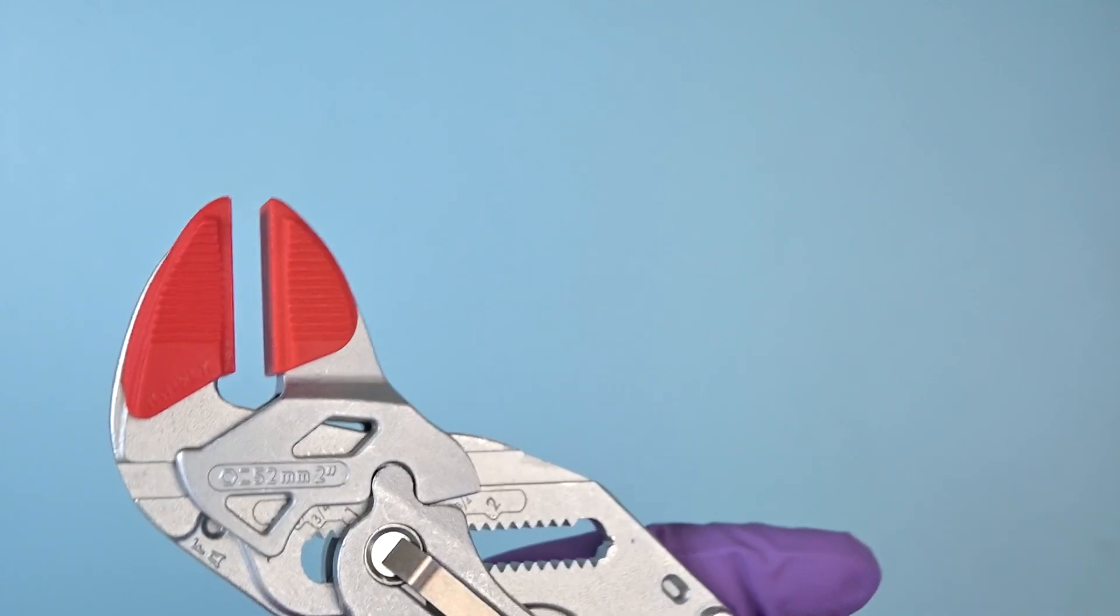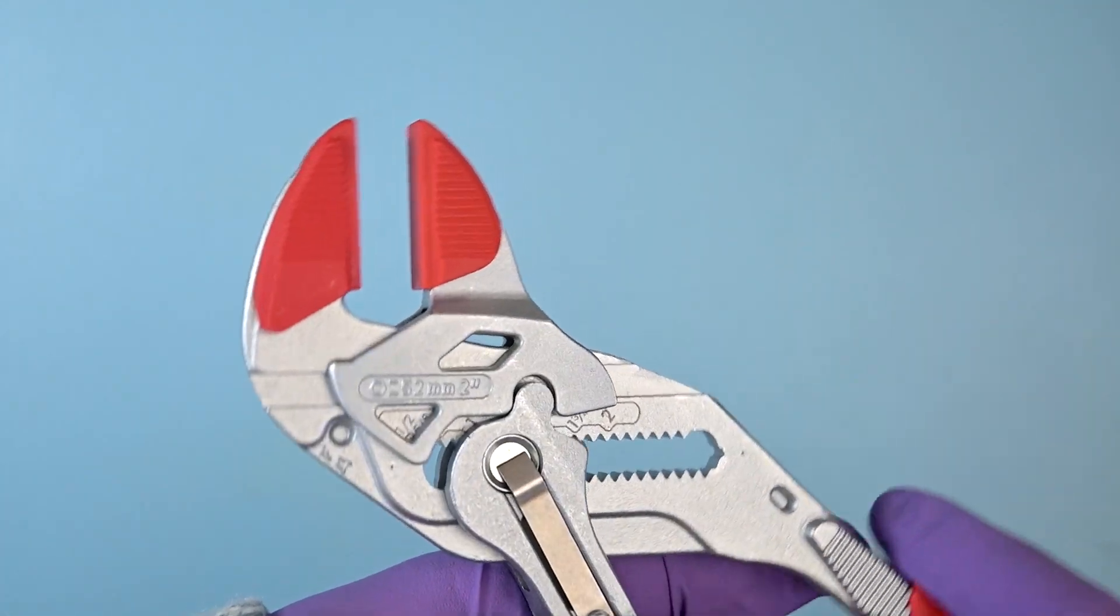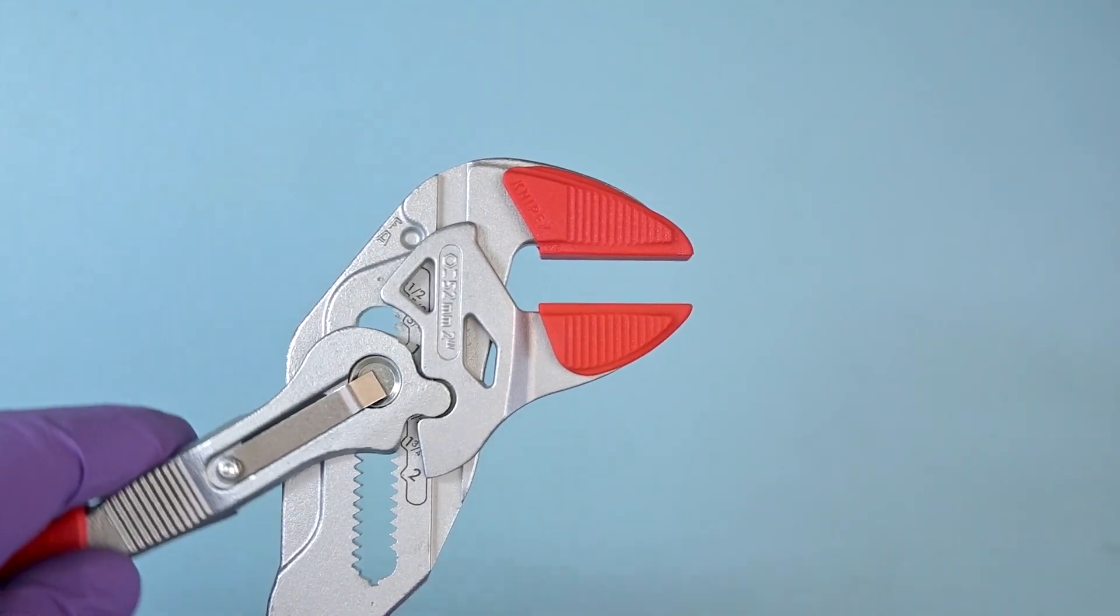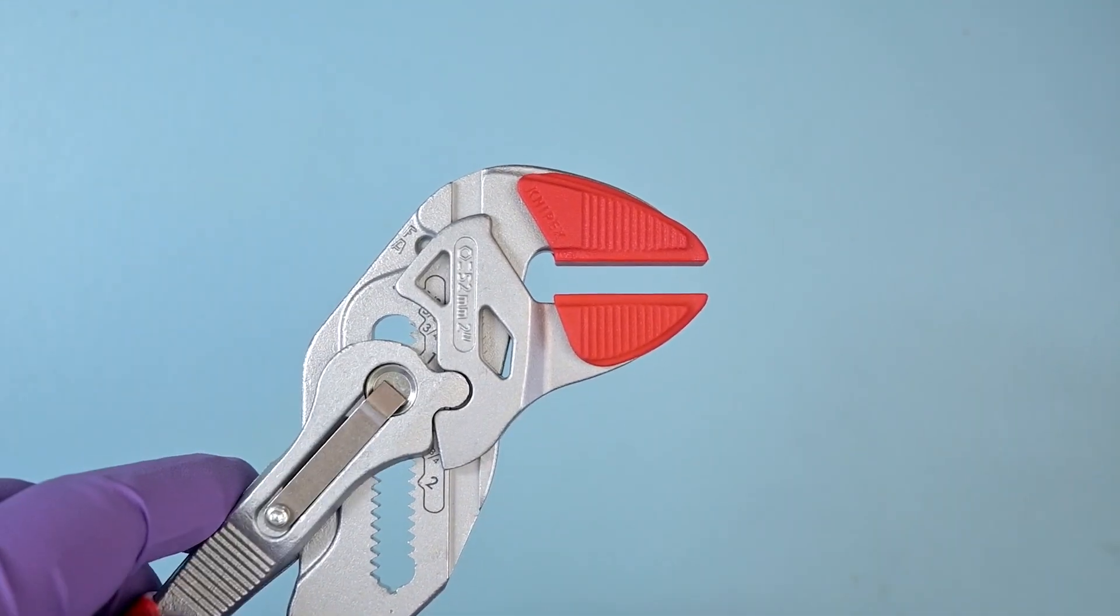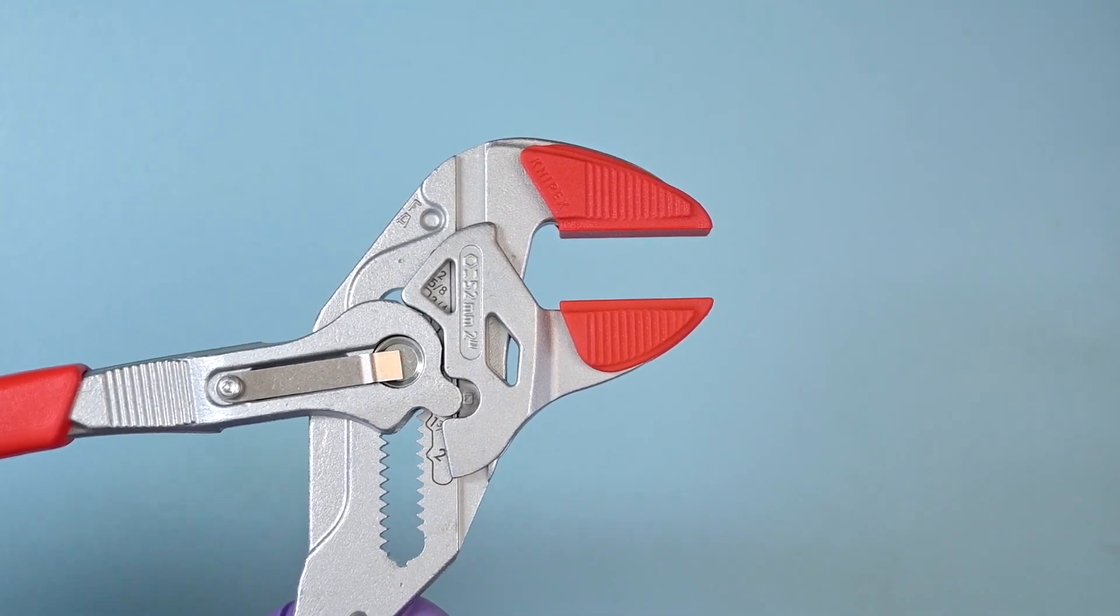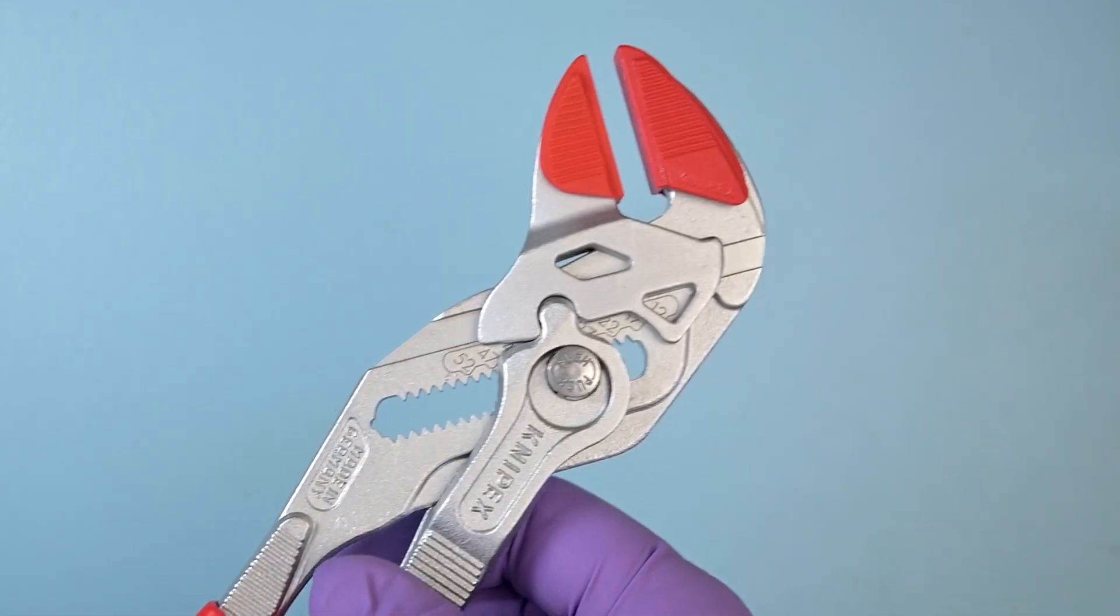These NYPEX wrench pliers easily cost you somewhere between 50 and 60 euros, depending on the model that you choose. Even though that's not cheap, I still think that's worth it because they make crimping cables a lot less of a hassle.